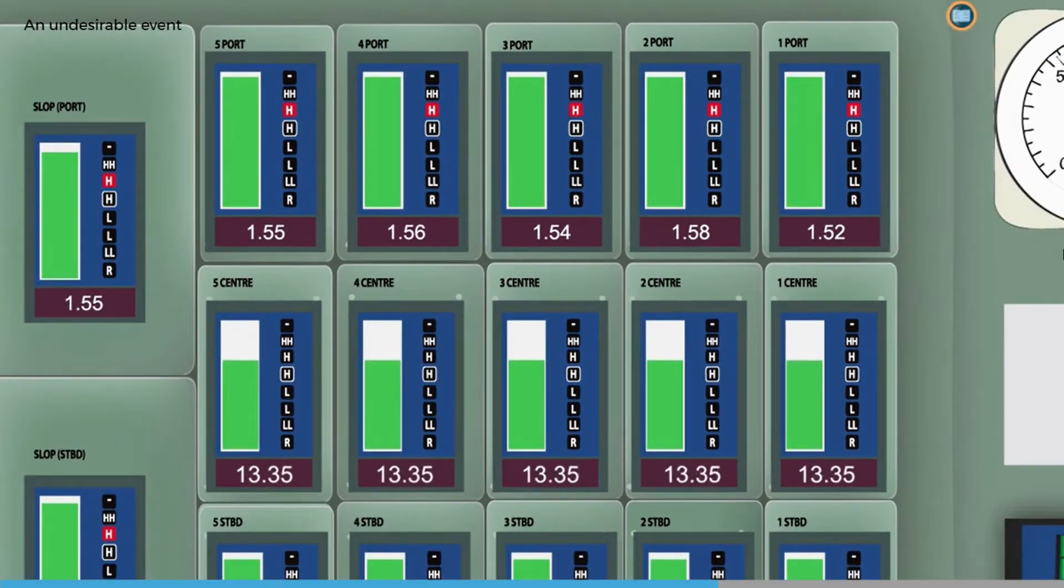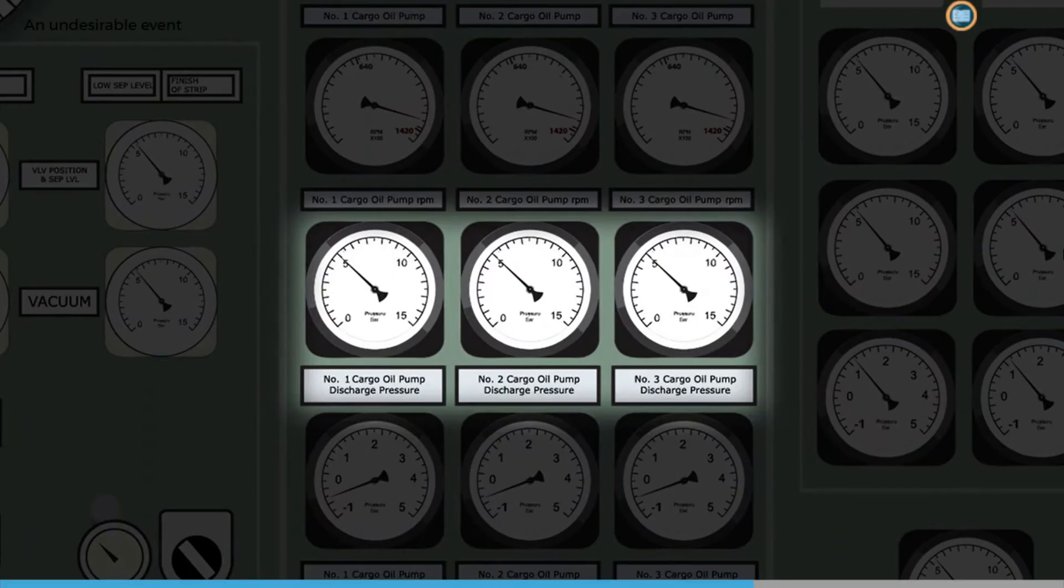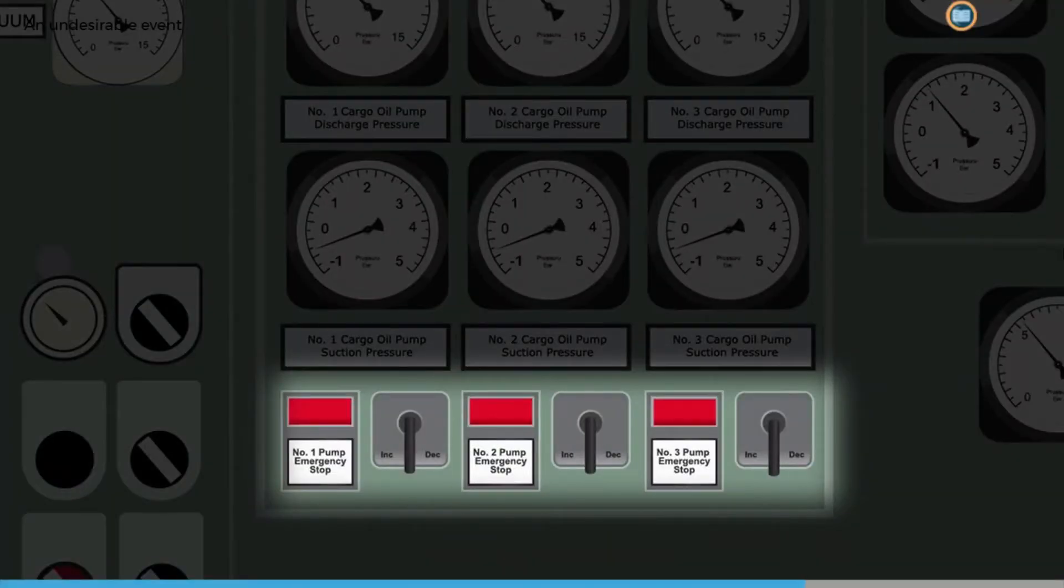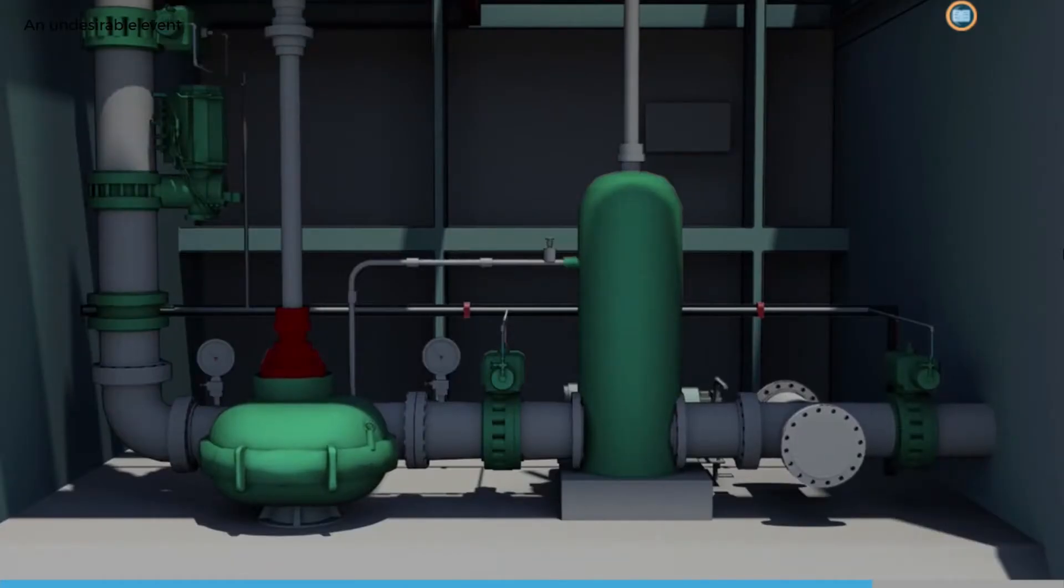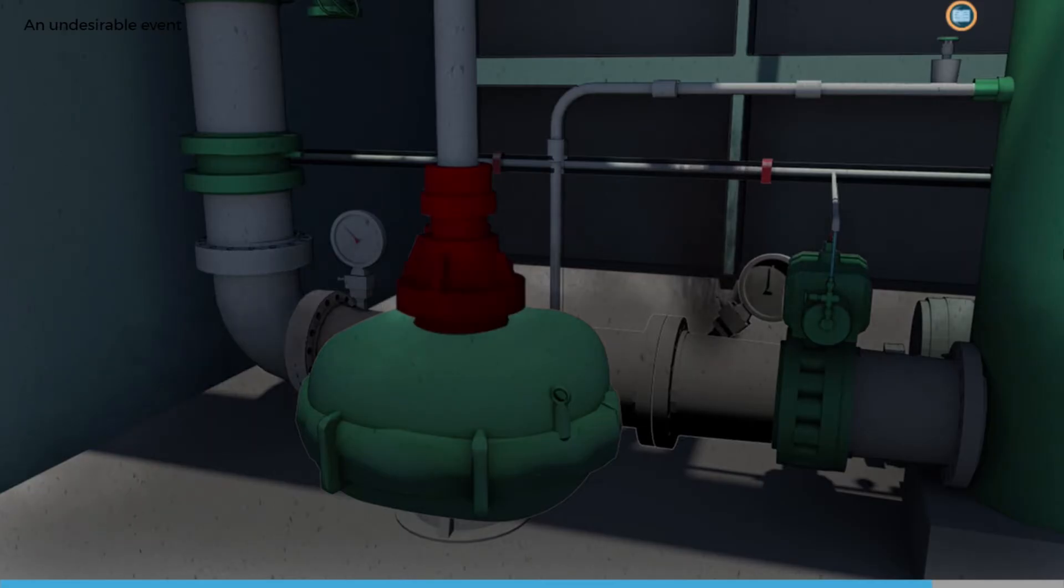When the tanks were close to empty, the pumps suddenly became very noisy and the pump discharge pressure gauge readings fell. This indicated that it was time to stop No. 2 pump as per the plan and slow down the other pumps as the tanks were nearly empty. Unfortunately, cavitation subjected the already weakened pressure gauge pipe to sudden vibration. This was enough to make it sheer and spray crude under high pressure all over the port side of the pump room.